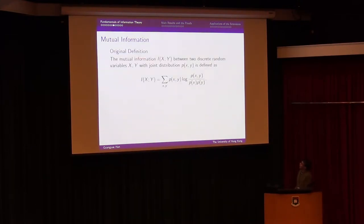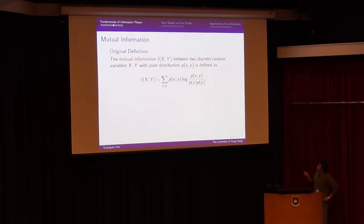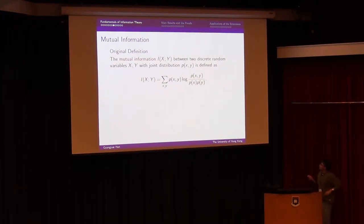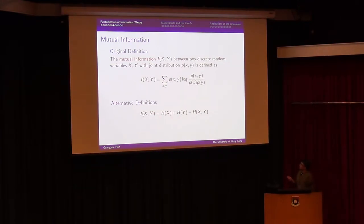Now we're ready for mutual information. The mutual information between two random variables X and Y is defined using the joint and marginal distributions. An alternative expression is the sum of individual entropies minus the joint entropy: H(X) + H(Y) - H(X,Y). Equivalently, it can be written as the difference between the entropy and the conditional entropy: H(X) - H(X|Y).